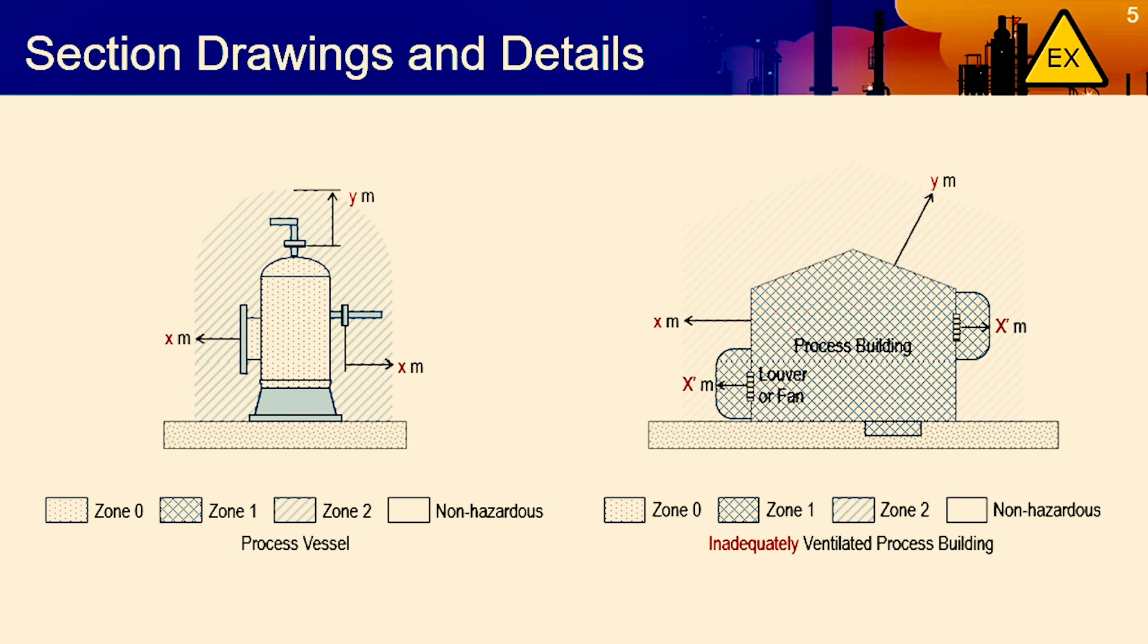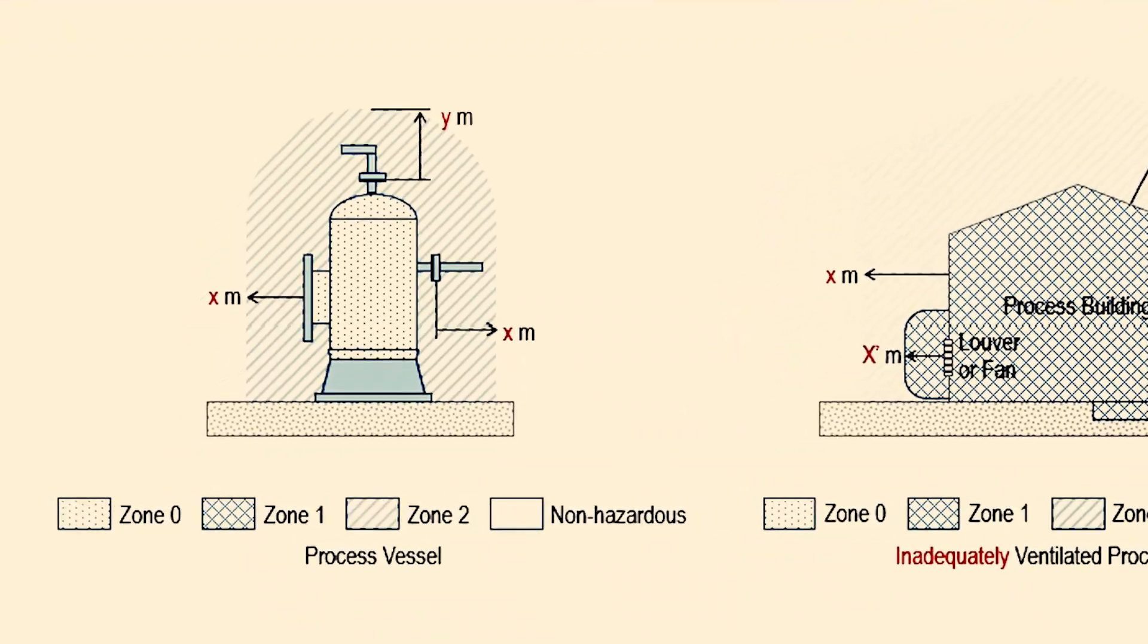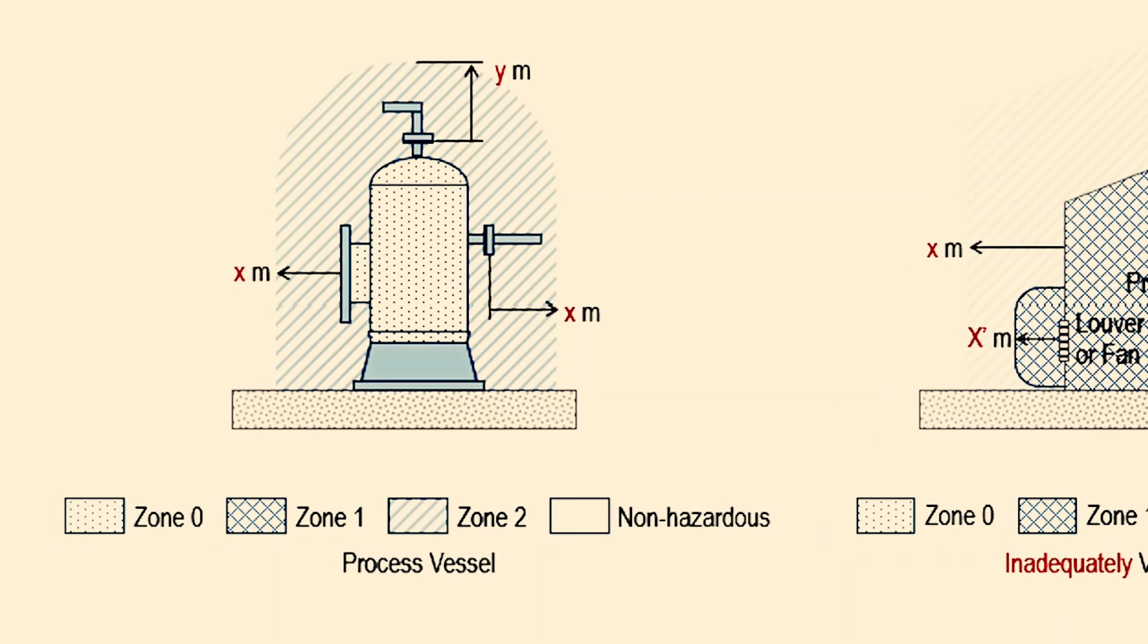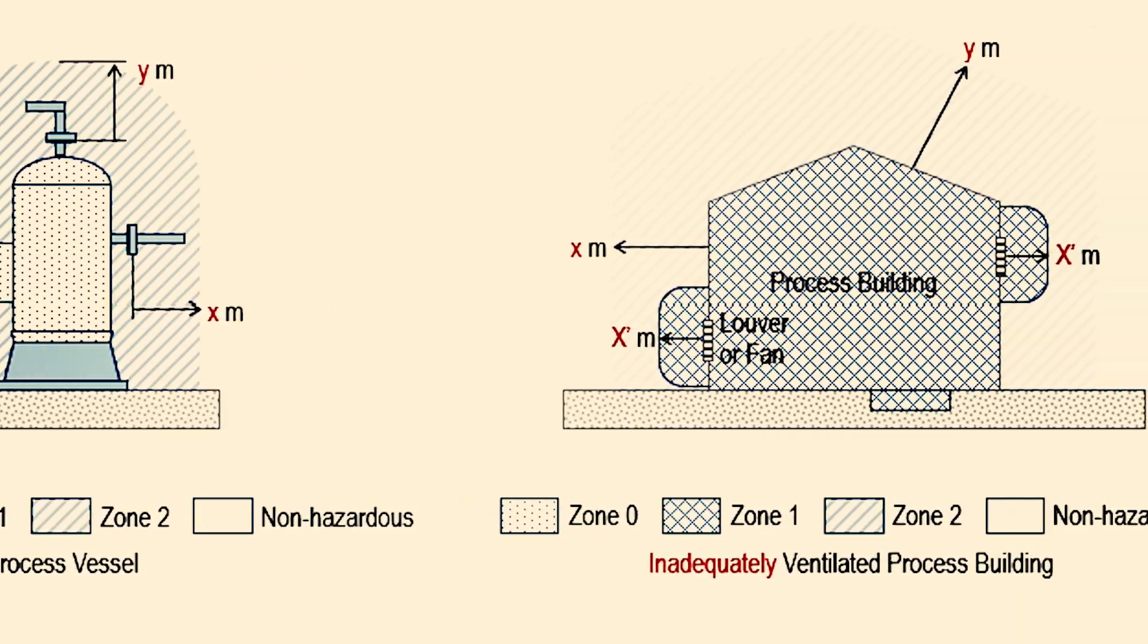Section drawings and details may be needed to further describe the degree and extent of classified areas. The diagrams may be sourced from recognized hazardous area classification publications using simplified methods, or custom-designed using source-of-release methods.